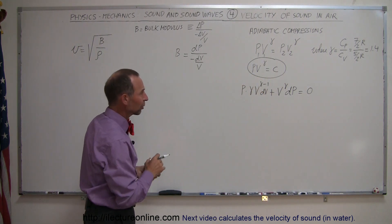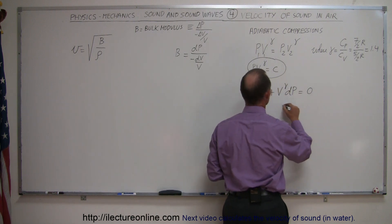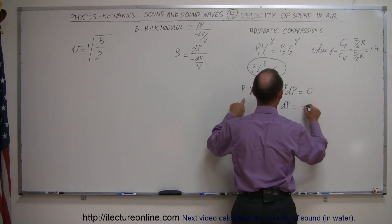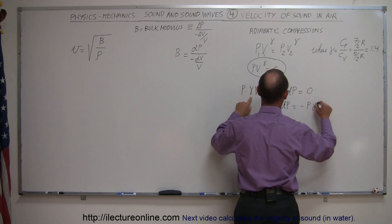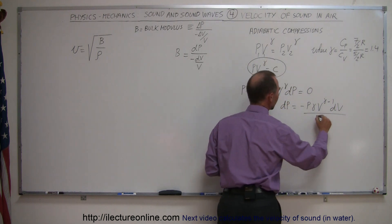I'm going to solve that equation for DP, which means I'm going to move this over to the other side. So we have DP equals minus P gamma V to the gamma minus 1 DV divided by the coefficient of DP, which is V to the gamma.